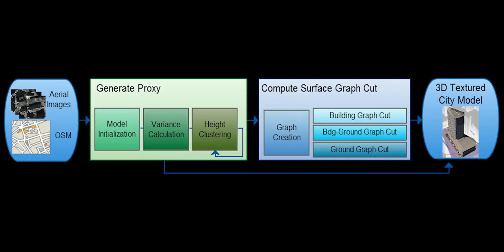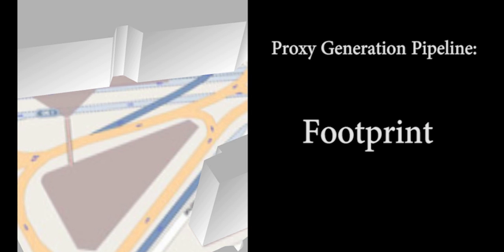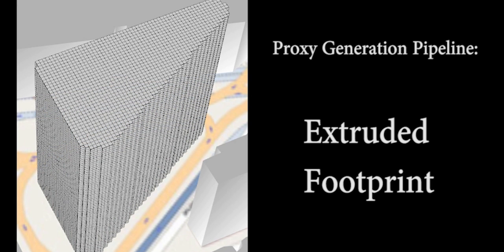We show our computational pipeline from images to 3D model. The first step is to generate a proxy model for each building. Starting with urban metadata, such as by OpenStreetMap, we extrude a coarse voxel-based building.